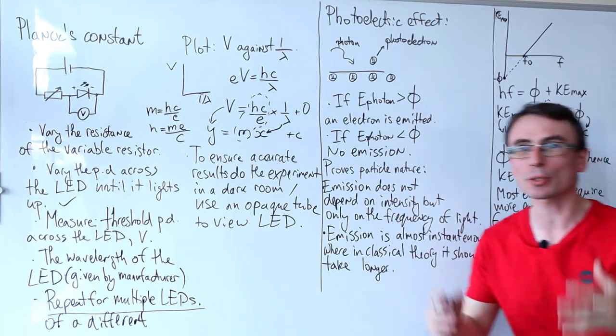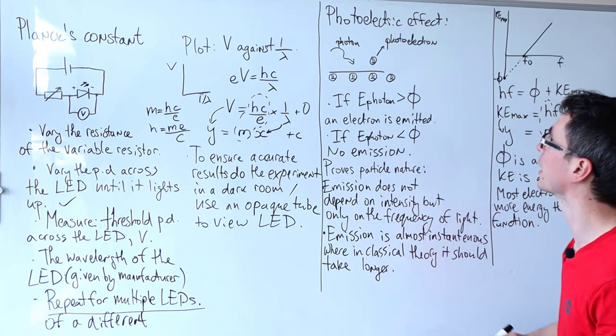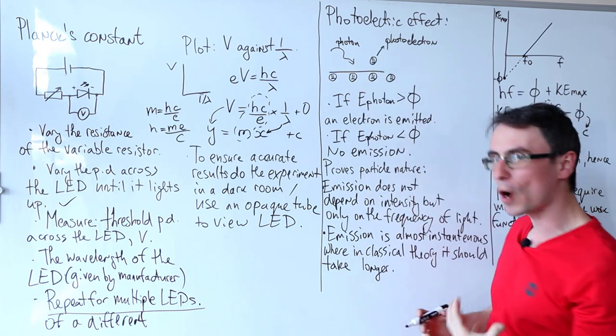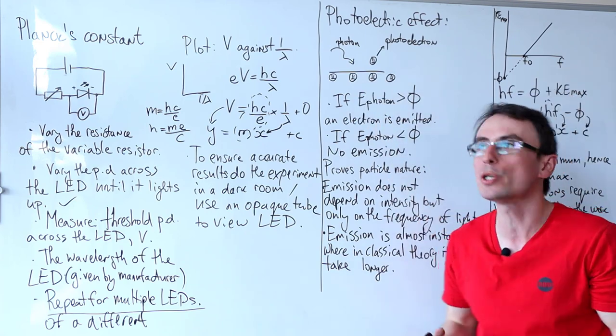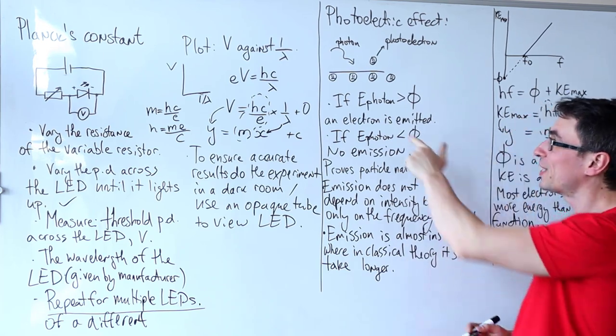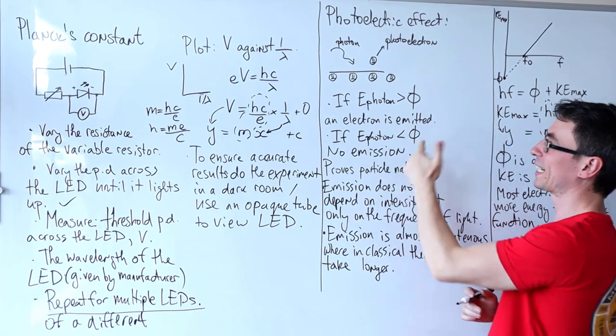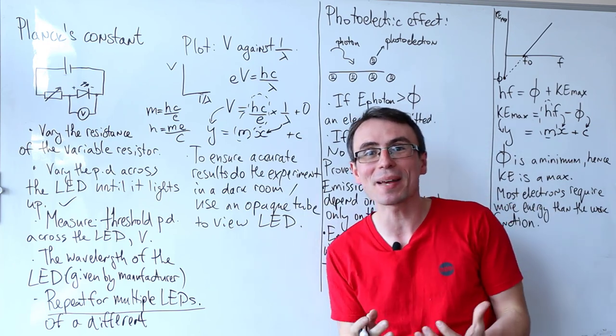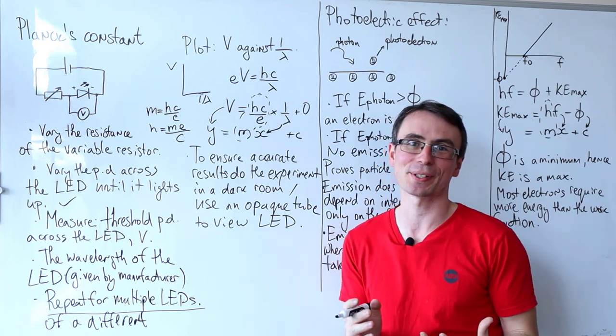On to the classic photoelectric effect, the experiment's explanation for which Einstein won his Nobel Prize. In a nutshell, the photoelectric effect occurs whenever a photon, a particle of light, strikes a metal surface and removes an electron. This is sometimes known as the photoelectron. If the energy of the photon is greater than the work function, an electron is emitted.